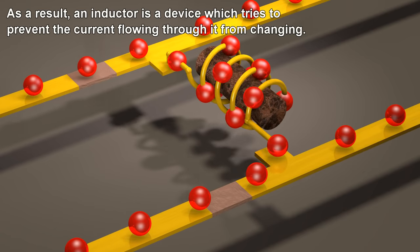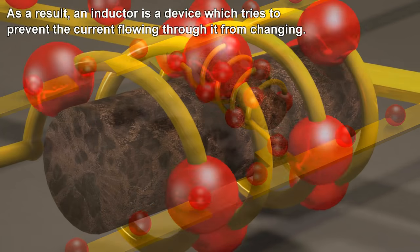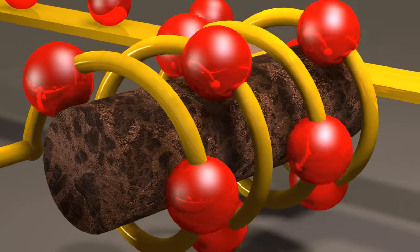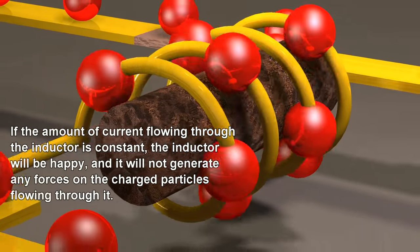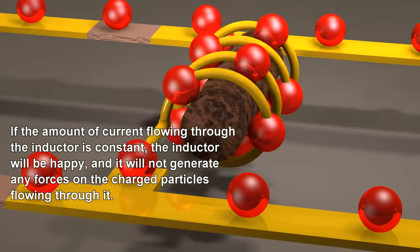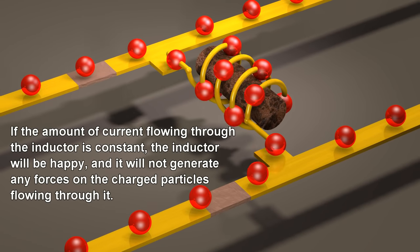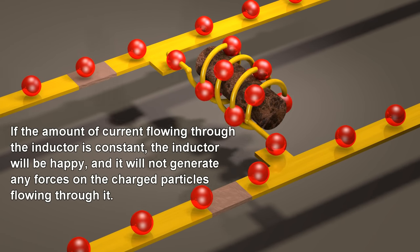As a result, an inductor is a device which tries to prevent the current flowing through it from changing. If the amount of current flowing through the inductor is constant, the inductor will be happy and it will not generate any forces on the charged particles flowing through it.